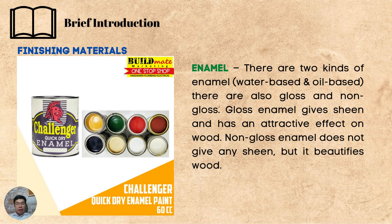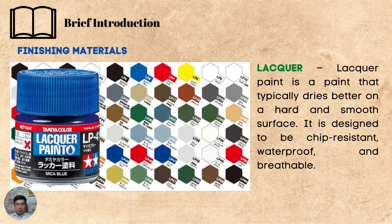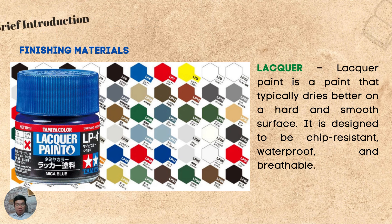The next one is enamel. There are two kinds of enamel: the water-based and oil-based. There are also gloss and non-gloss. Gloss enamel gives sheen and has an attractive effect on wood. Non-gloss enamel does not give any sheen, but it beautifies wood. The last one is lacquer — lacquer paint typically dries better on a hard and smooth surface. It is designed to be chip-resistant, waterproof, and breathable.